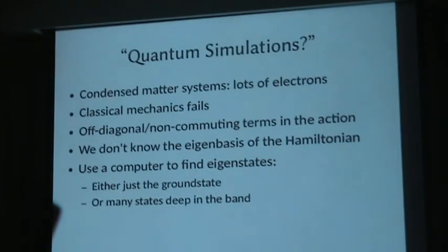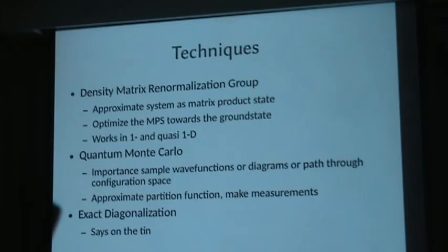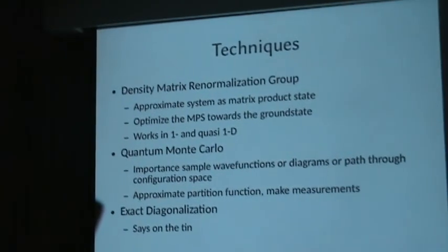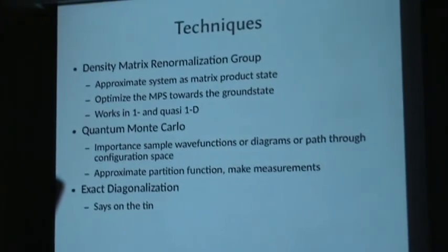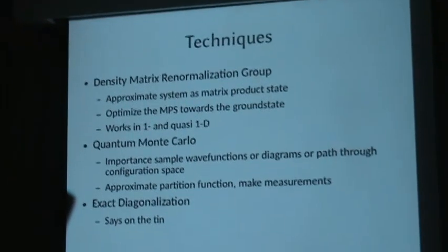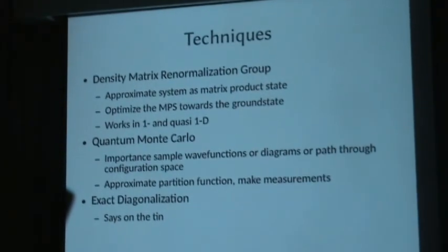So that's basically my job — diagonalizing matrices. Really big matrices. There are many ways to try to do this. These are the three big techniques our group uses. DMRG, which is density matrix renormalization group — a technique that's exact in one and almost one dimension where you have a ladder of lattice sites. You write down some matrix product state as your guess for a wave function, do a huge number of optimizations, and you have the ground state. It's exact, and you can treat systems that are infinitely long.